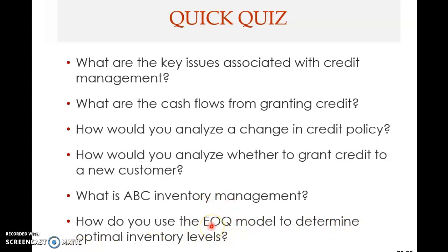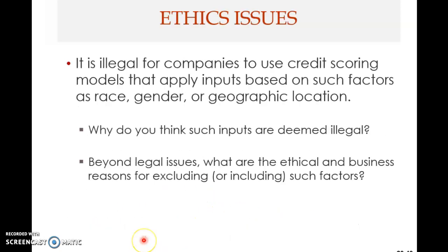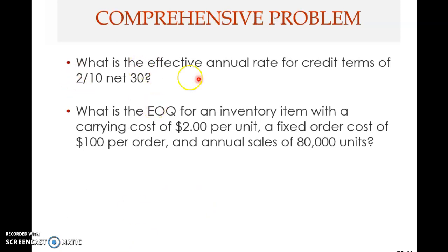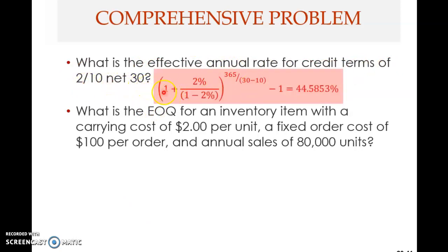The EOQ model determines the economic order quantity — the order quantity that minimizes the total inventory holding cost. That is why we call this the economic order quantity, and we have seen the formula for doing that, as well as the extensions to it.